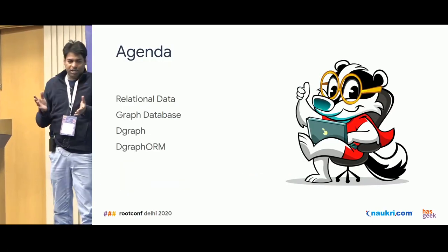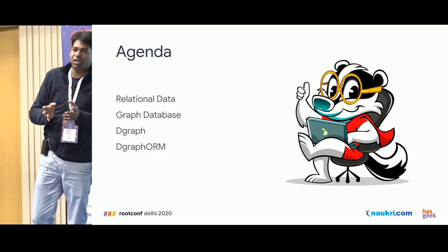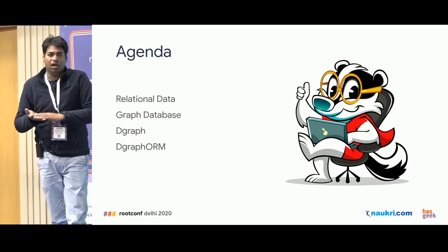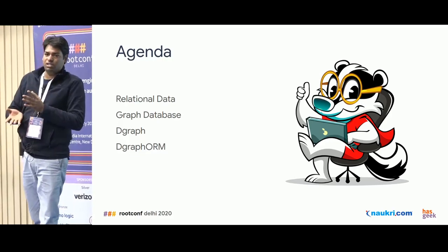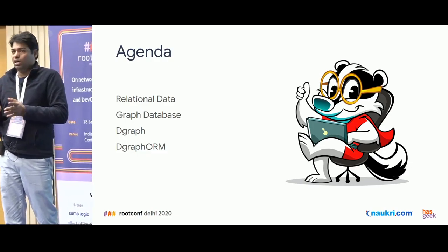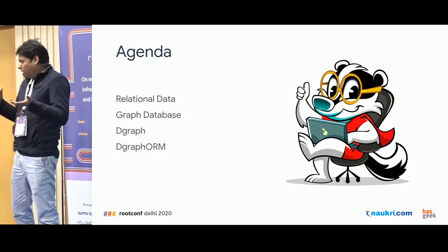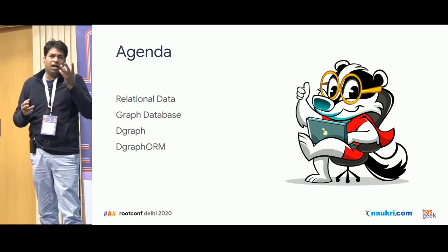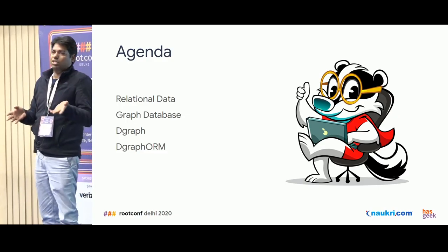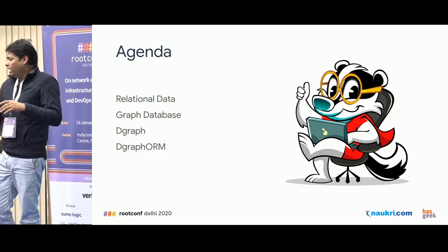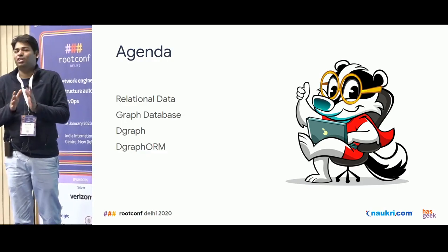Let me set the agenda first. I will talk about relational data — what the data is supposed to be and how relations are actually there. We'll talk a bit about graph databases, what they are and how they're helpful. We'll discuss DGraph, which I found as a solution during my experiment, and also the DGraph ORM which I created for certain reasons.